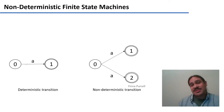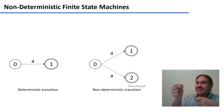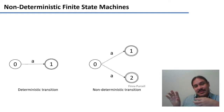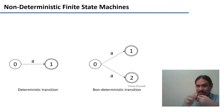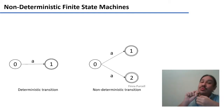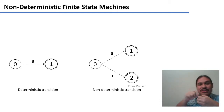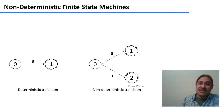A non-deterministic transition is one where the input doesn't completely determine where you're going to go. On the automaton on the right, if you're standing at state zero and you get the input A, there are two things that can happen — you can go from zero to one, or from zero to two. Because the input doesn't completely determine where you're going, we call this a non-deterministic transition.